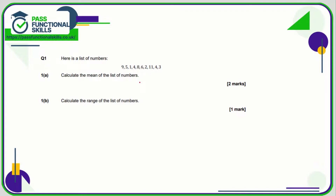So we're dividing that total by ten. To make life easier since I can't use a calculator, rather than adding them in the order given, I know that nine plus one is ten, eight plus two is ten, and four plus six is ten — so there's 30. Then 35, 36, 37, 38, 39, 40, 50, 53. So 53 divided by 10 is 5.3.